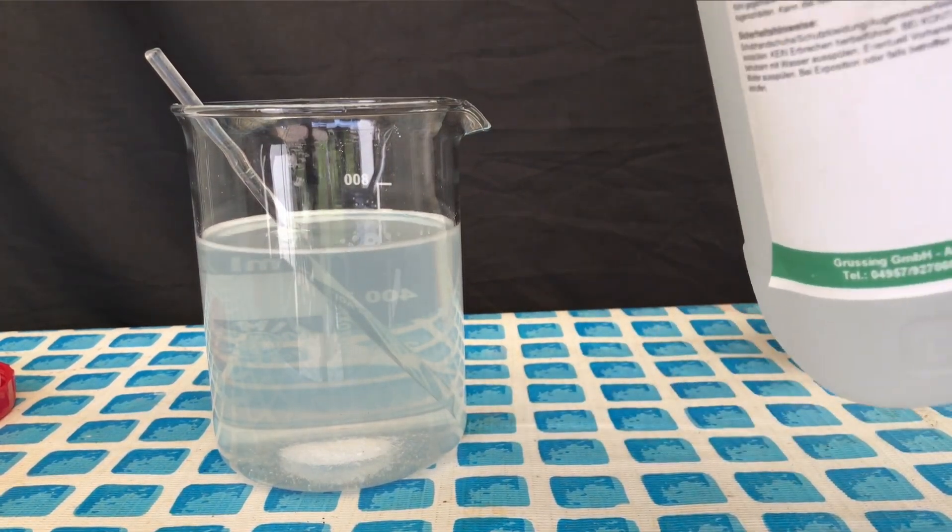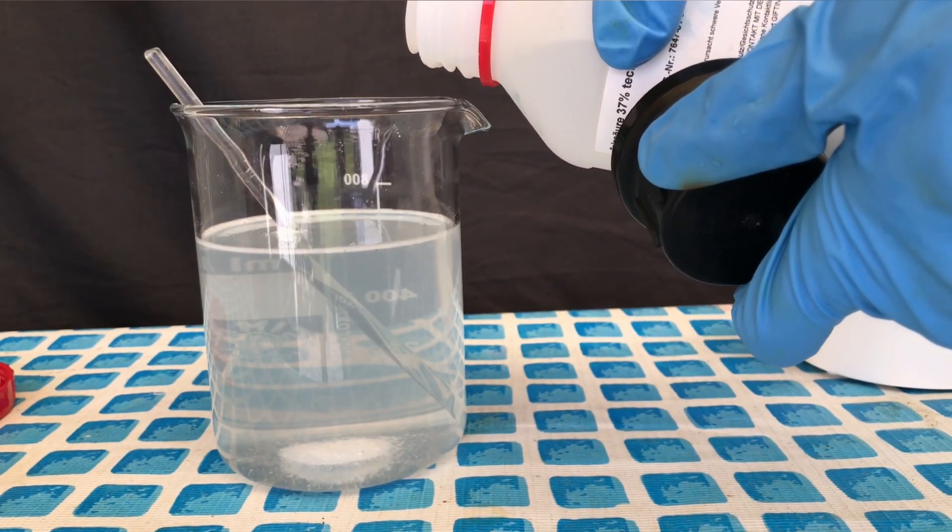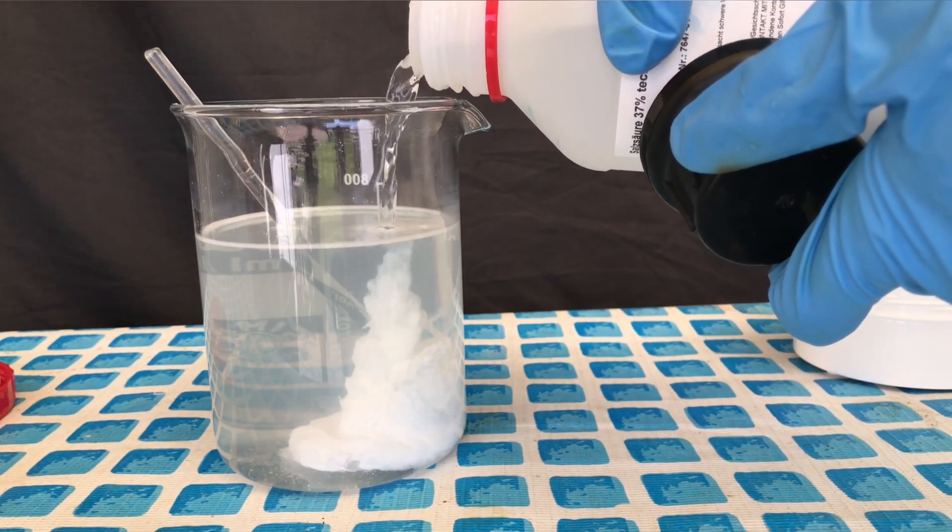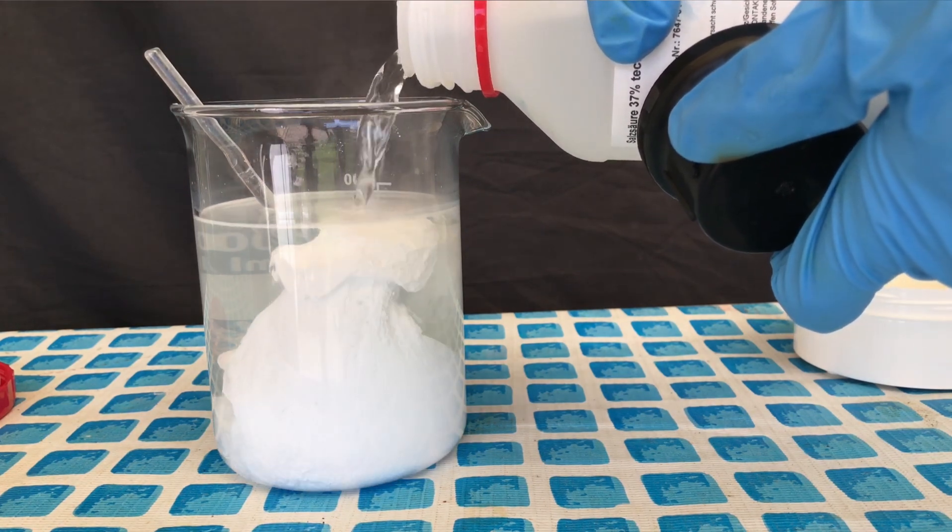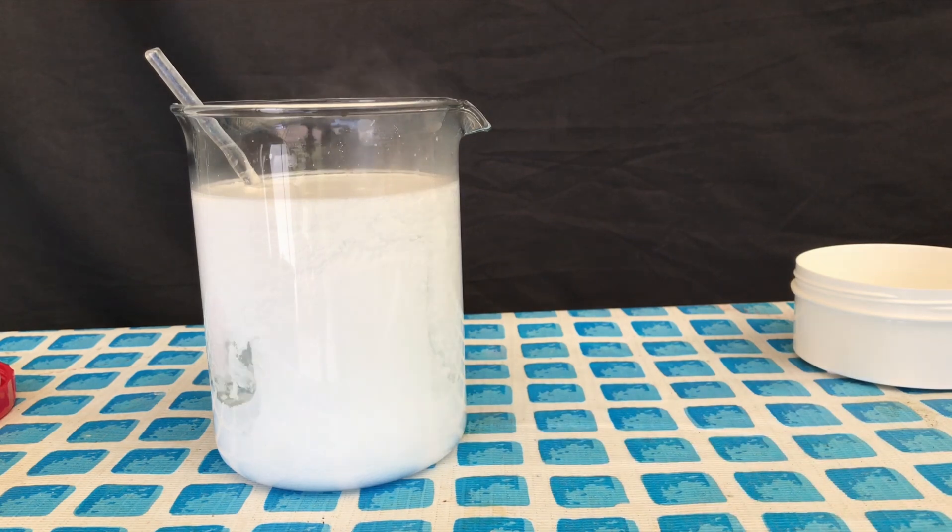Now it's time for some 37% hydrochloric acid. Low concentrations are also okay but I only have 37% hydrochloric acid. A white precipitate of insoluble lead(II) chloride immediately precipitated out.